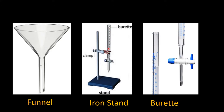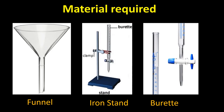Basically, the burette is an apparatus which is used in titration. Here is the tap — we open the tap slowly and carefully so that the solution flows drop by drop into the flask. The burette is calibrated, meaning we know exactly how much solution has been used, because it is marked with measured readings.